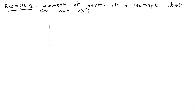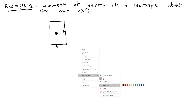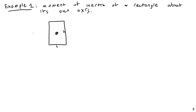Consider a rectangle. Since I'm going to take the moment of inertia about its own centroid, I'm going to place the coordinate system with the origin right at the centroid. The rectangle has a width B and a height H. I have my x-axis and y-axis both running through the centroid.